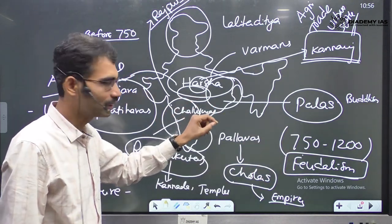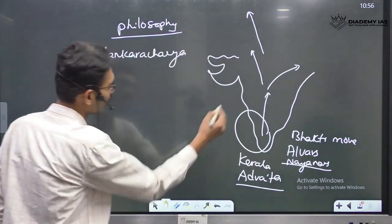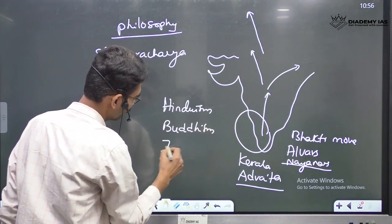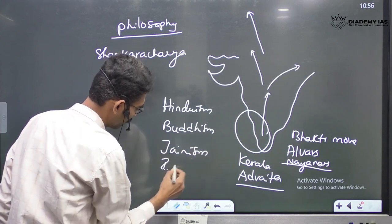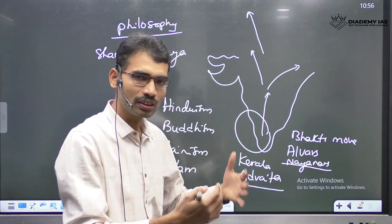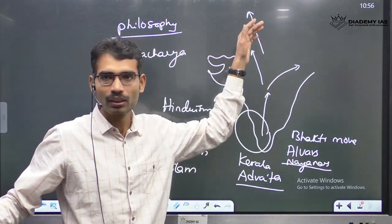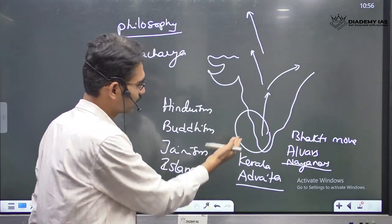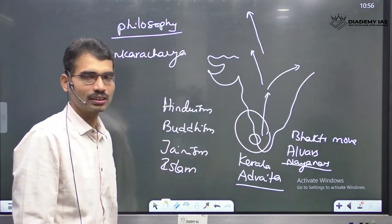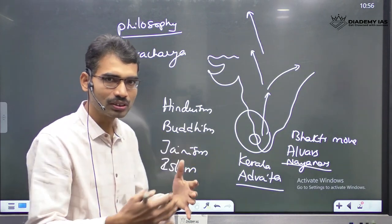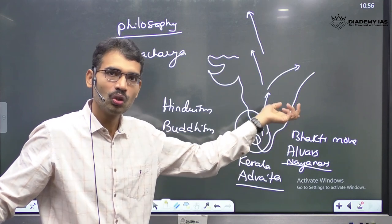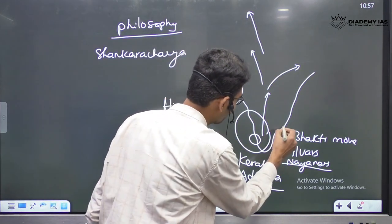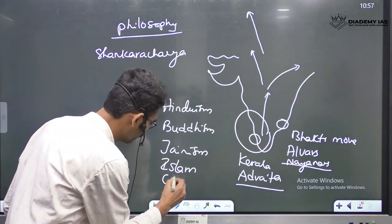By this time period, Hinduism, Buddhism, Jainism, Islam had all arrived. Christianity was also there — St. Thomas reached Kerala in the first century AD itself, just after the death of Jesus Christ. Even today many Christians in Kerala are ones who accepted Christianity during the time of St. Thomas. The tomb of St. Thomas is near Madras.